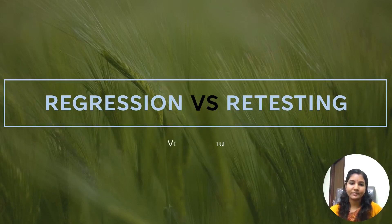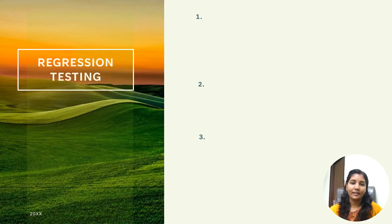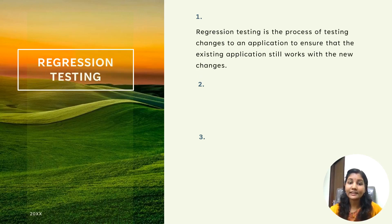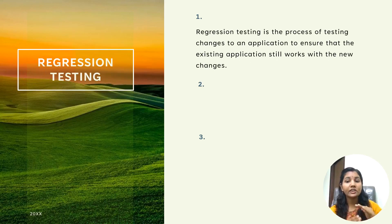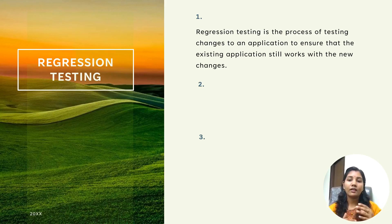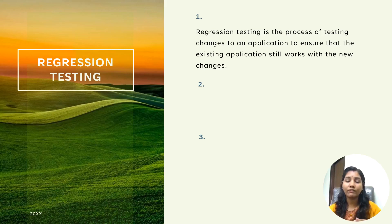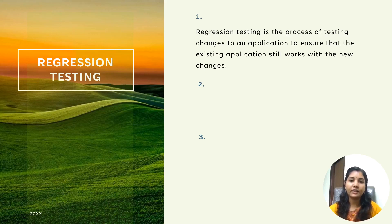So, what is regression testing? Regression testing is the process of testing changes to an application to ensure that the existing application still works with the new changes. Basically, when a developer fixes any defect or new functionality is added, the existing functionality should still be working fine — the unchanged code should work properly. That is the main meaning of regression testing.